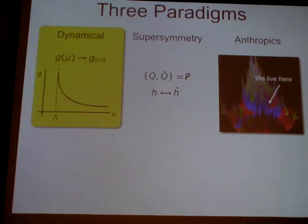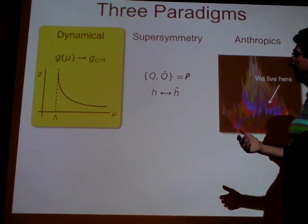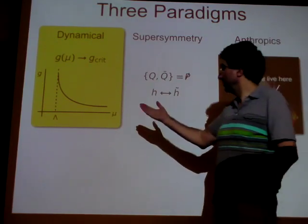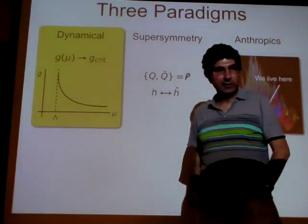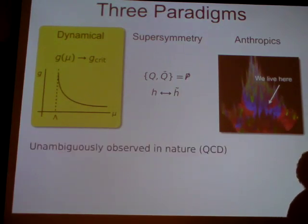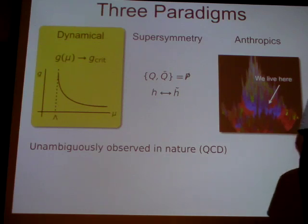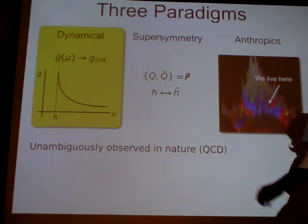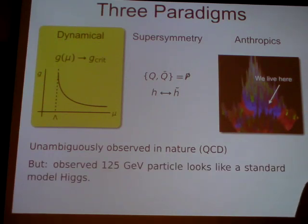The idea is that a natural way to generate scales, which we observe often in nature, is that some coupling becomes strong, and then something interesting happens. This is the one paradigm for the solution of the hierarchy problem that has been unambiguously observed in nature. In nature, the paradigm is QCD.